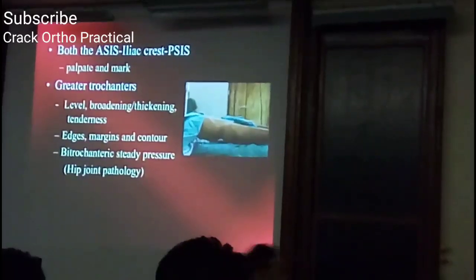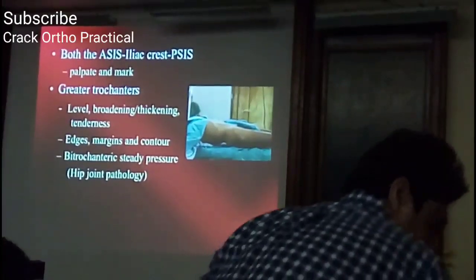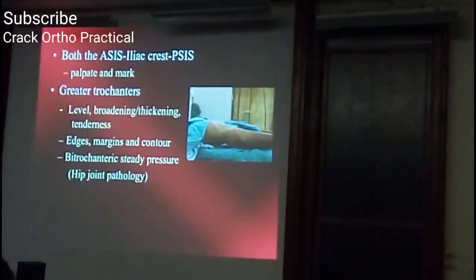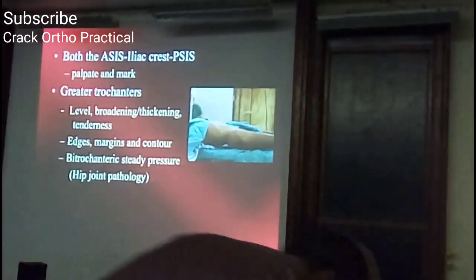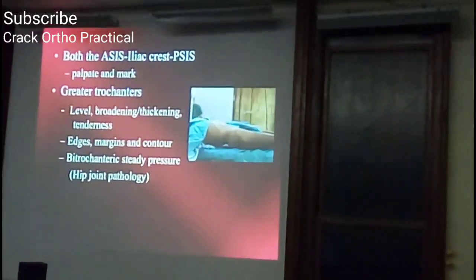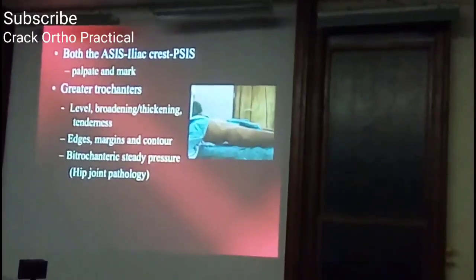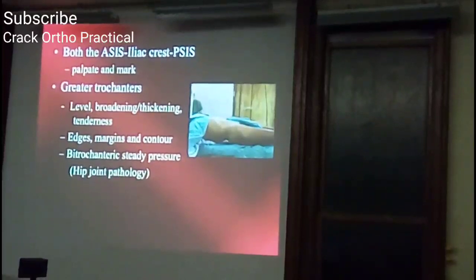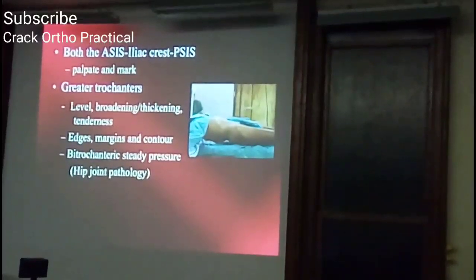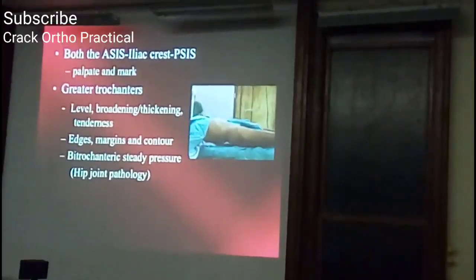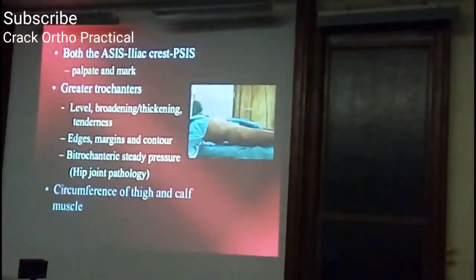The difference between broadening and thickening is important in examination. Broadening means widening in one direction — anteroposterior or mediolateral — as in a simple bone cyst. Thickening means uniform widening in all directions, as in osteomyelitis. Check whether the greater trochanter is tender or non-tender, palpate the edges and contour, and apply steady trochanteric pressure on both sides — pain on pressure suggests hip joint pathology such as arthritis.